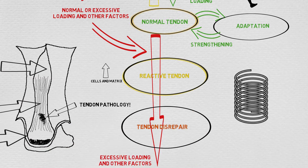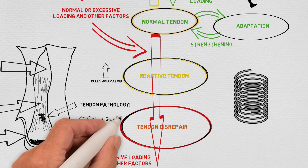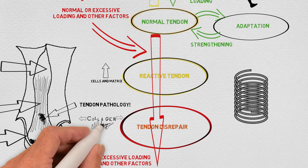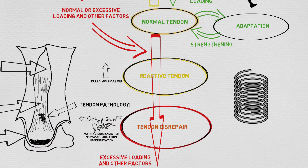The tendon continues to try and thicken to protect itself, but as this occurs, we start to see separation of collagen fibres and disorganisation of the cell matrix. Since the continuum was first proposed in 2009, we also see new blood vessels and nerves, which may account for some of the ongoing pain.